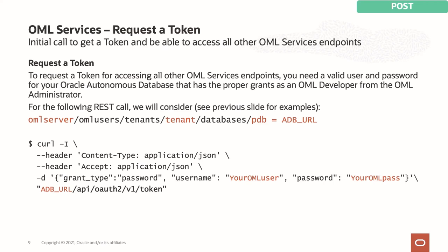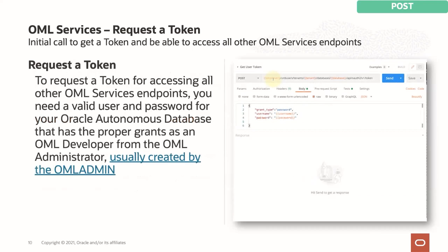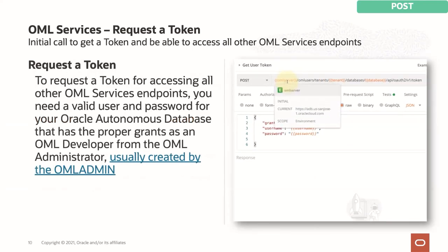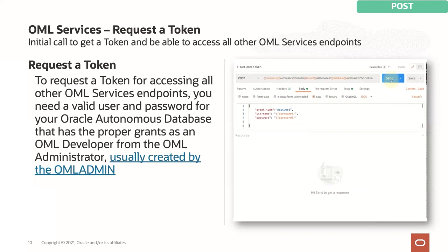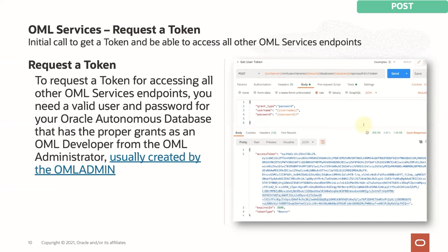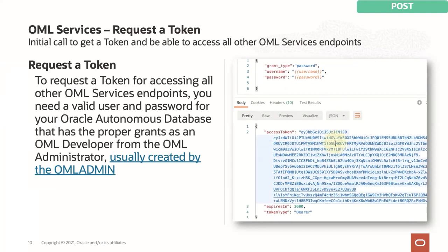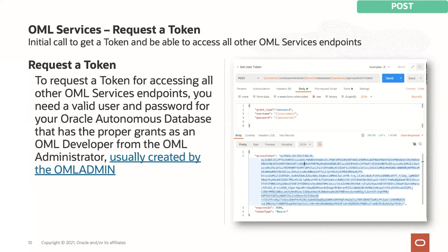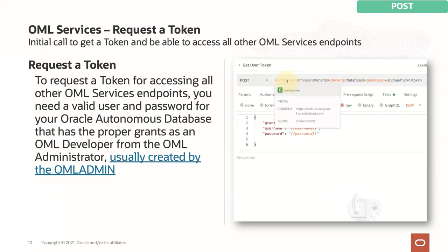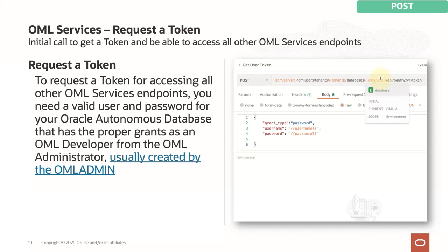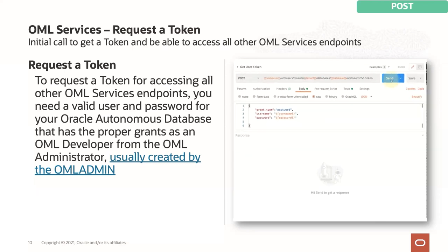To get a token you can use something like curl — a basic and widely-used interface for REST APIs — but you can use any REST API interface you're comfortable with. This is the example curl command that gets you back your token. I like to use Postman as a testing environment. You send your server, tenant, database, username, and password, and you get back a very long access token.